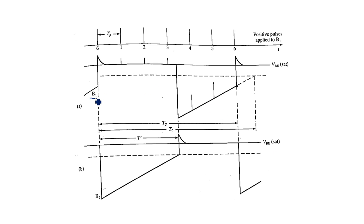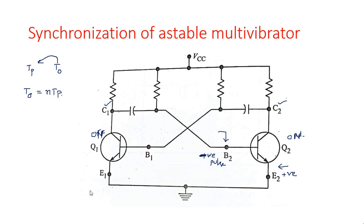See here — this is the base 1 waveform and this is the base 2 waveform. We are working with the base of the transistors because the transistors by default are changing their states after a certain time. We are applying some negative or positive pulses to the transistors to make them change to other states before their premature time.